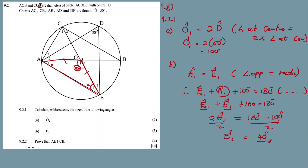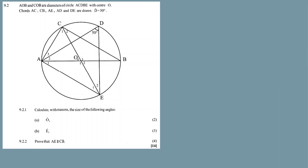Now for 9.2.2 — the last question. Prove that AE is parallel to CB. To prove parallel lines, we can use corresponding angles, co-interior angles where the sum is 180 degrees, or alternating angles where one angle equals the other. There's no transversal F between CB and AE, so let's think about which approach to use.